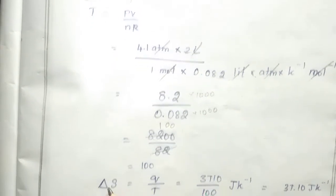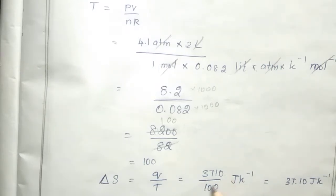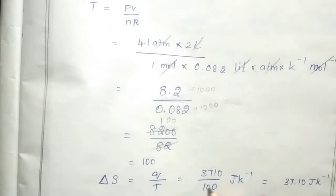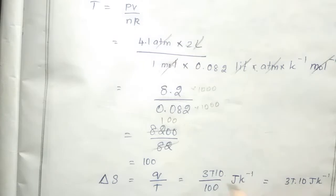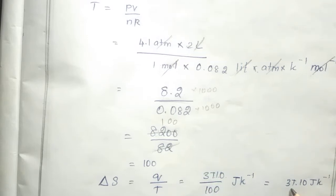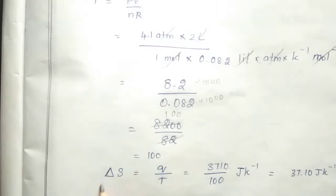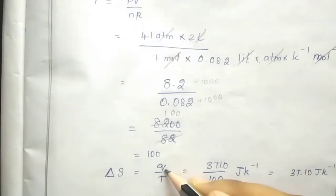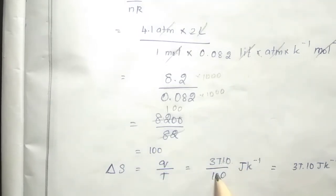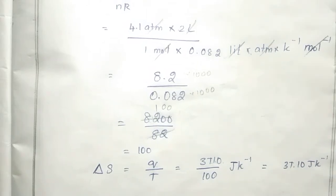Now, delta S is equal to Q divided by T, which is 3,710 J divided by 100 K, giving us 37.10 Joule per Kelvin. This is the entropy change. The answer is delta S = 37.10 J/K.